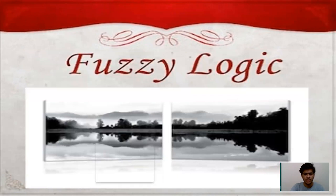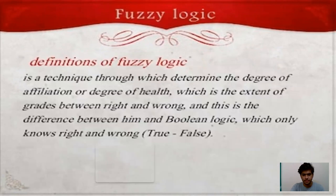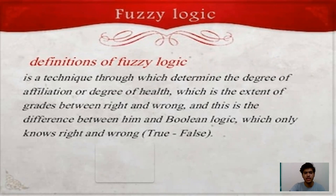This picture is an example for fuzzy logic. The definition of fuzzy logic is a technique through which we determine the degree of affiliation, or degree of truth, which is the extent between right and wrong. This is the difference between fuzzy logic and Boolean logic, which only knows right and wrong — that is, true or false.